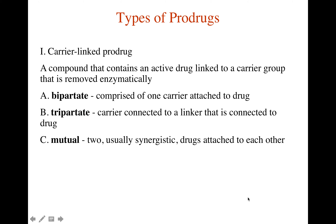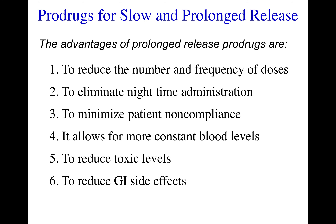The type of carrier-linked prodrugs we've discussed up to now are bipartite carrier-linked prodrugs — it's where we have a carrier directly conjugated to the drug. The exception is Vigabatrin and GABA, which is not a bipartite prodrug but a mutual prodrug. All of the rest of the examples given in this section are bipartite carrier-linked prodrugs.